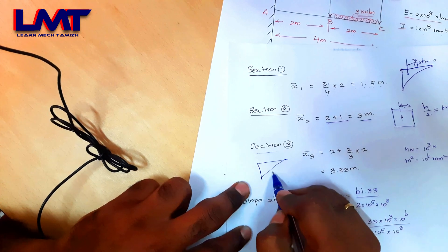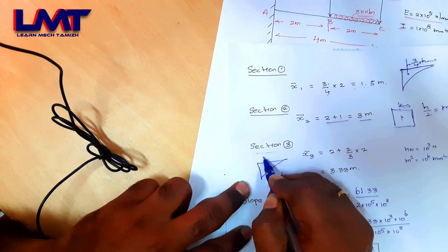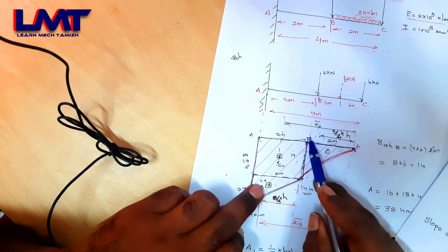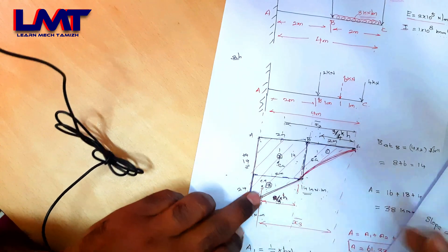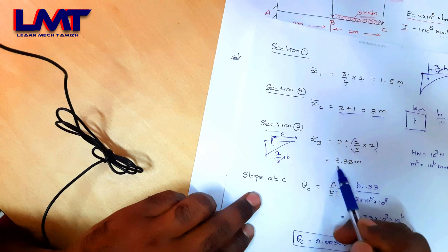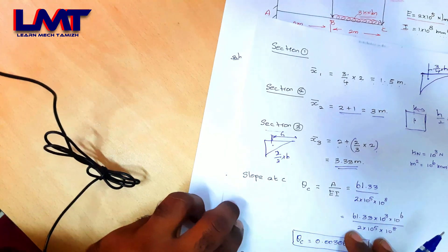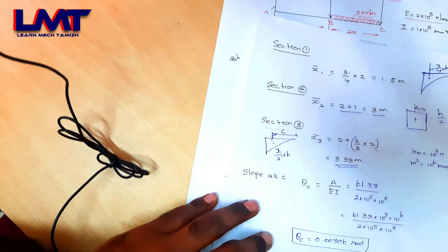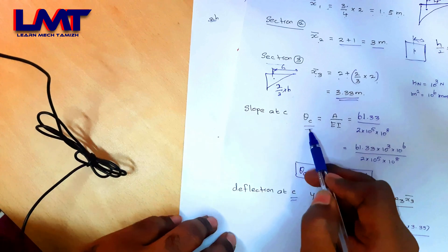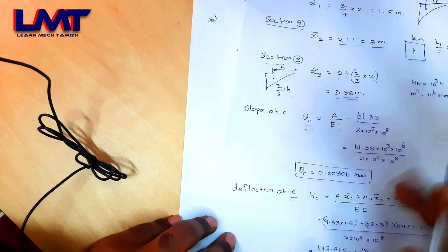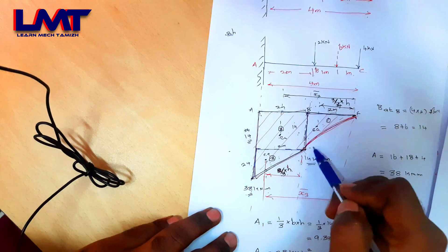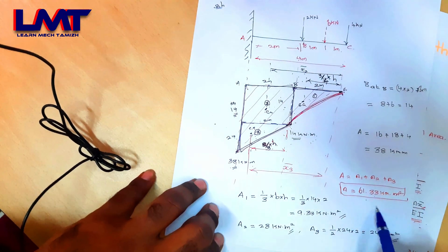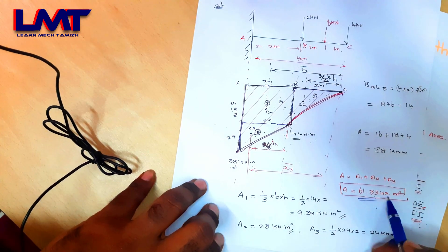Section 3 centroid: the rectangle spans 2 m and the triangle adds 1 m, so total from free end is 2 + (2/3)×2 = 3.33 m. Now we apply the slope formula: slope = A / (E×I), where A is the total area A1 + A2 + A3 = 9.33 + 28 + 24 = 61.33 kNm².